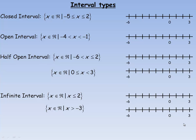There are four different interval types. A closed interval means you include both numbers on either end. In interval notation, you write a square bracket on either end — for example, all numbers between negative 5 and 2, including negative 5 and 2. On a number line, both endpoints are filled in with the region between them shaded.